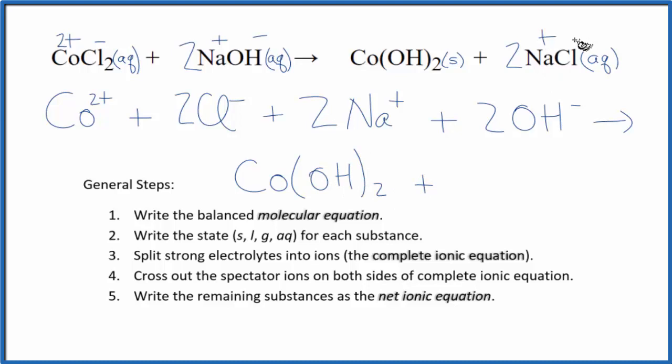And we had a plus and a minus. So we have two sodium ions here and two chloride ions. So this is the complete or total ionic equation.